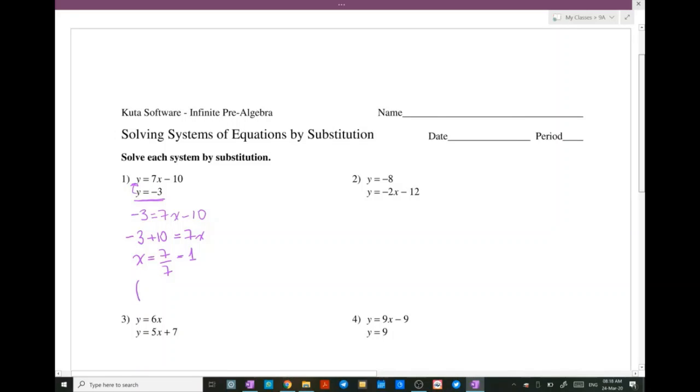So the result or the solution for this system is x is 1, y is minus 3. From where did I get y minus 3? They already gave us the value for y, so it's easy for me to find x.